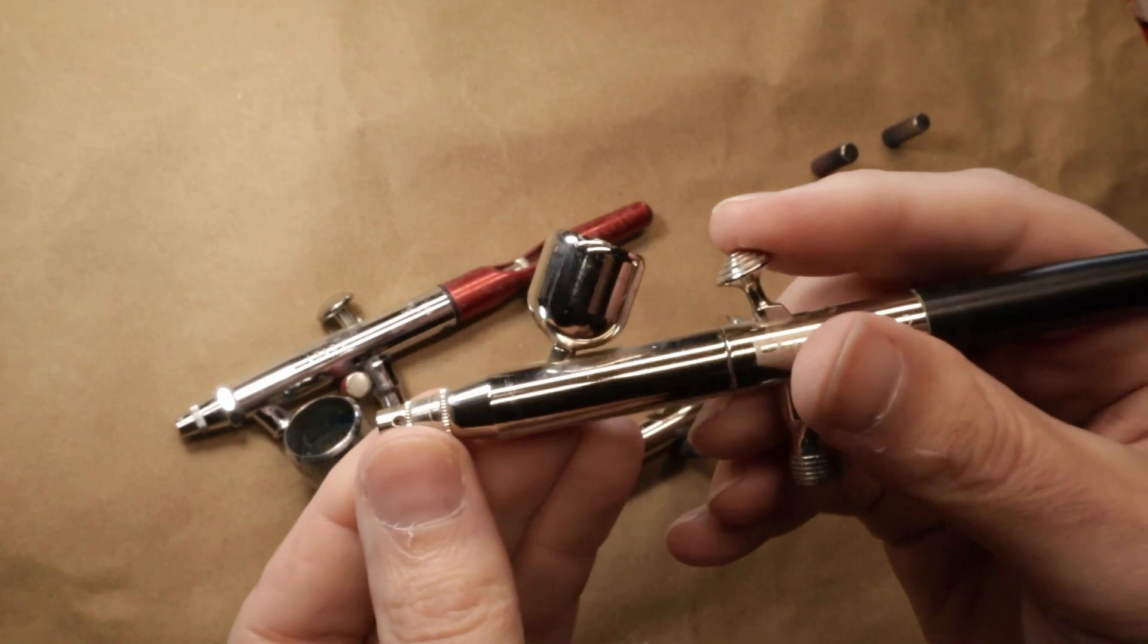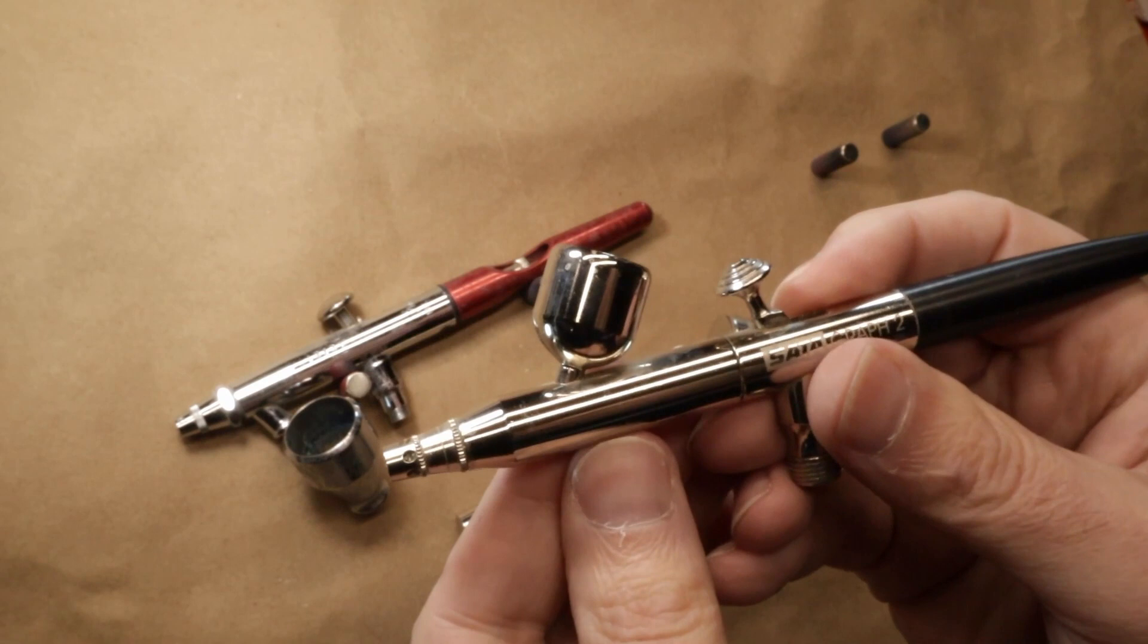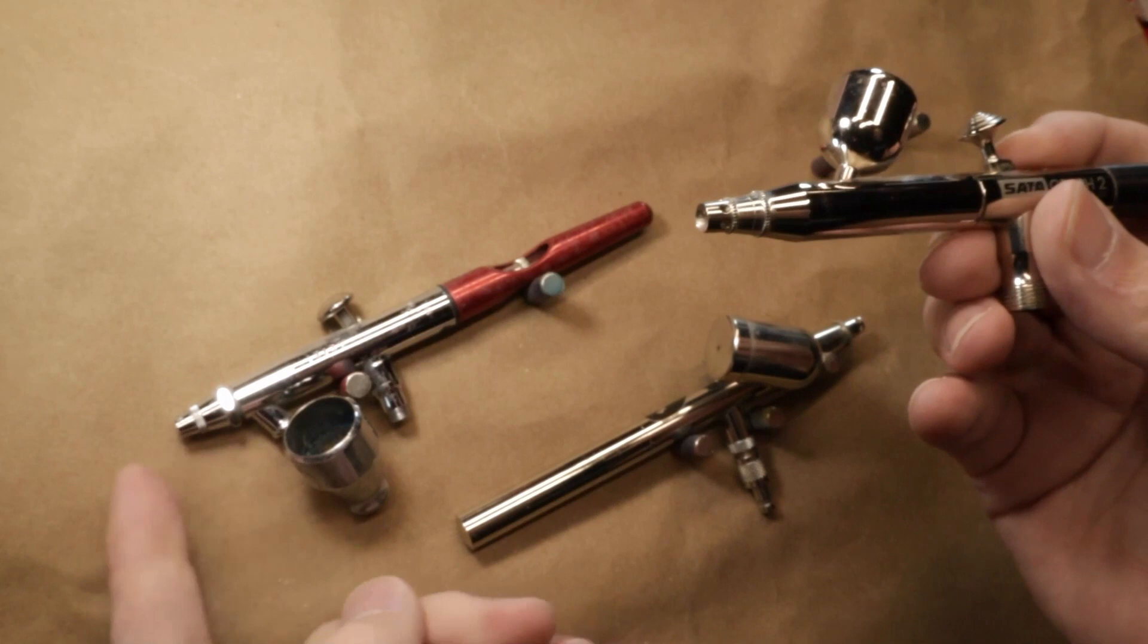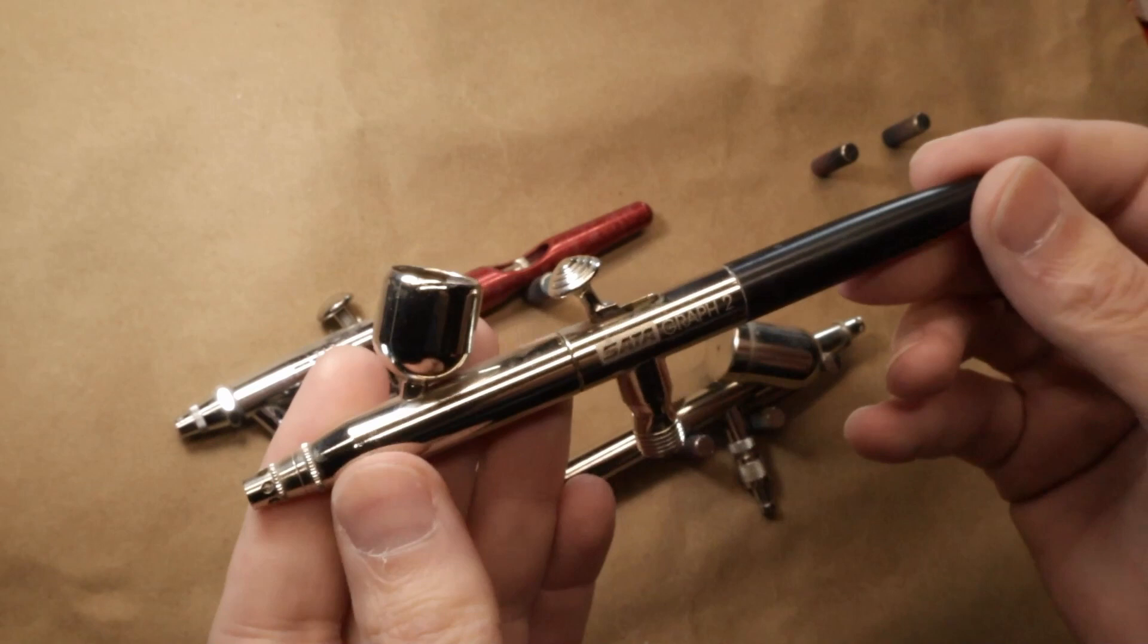But on the other side of that, for doing scale modeling or fine illustration, a small gravity feed airbrush works really really well for that. Gravity feed brushes just by nature can run at a slightly lower air pressure as well because they have that assist from the gravity, where this guy still has to use the siphon action to pull that up, and the siphoning happens from that higher air pressure. So these gravity feeds are generally better for closer detail work.